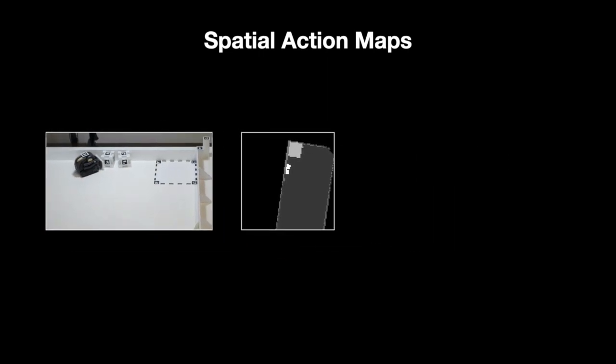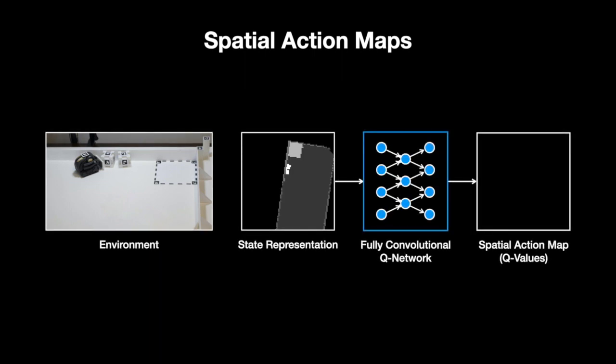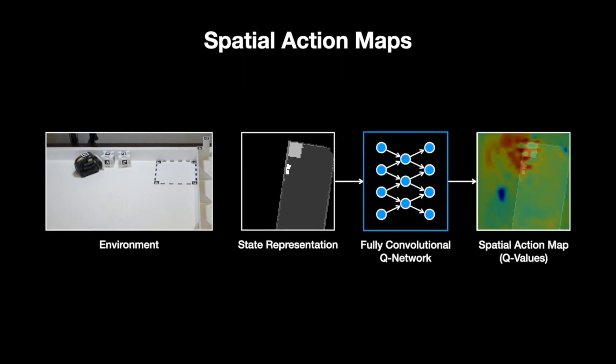This allows us to use a fully convolutional network to map from state images to actions, such that the actions are spatially anchored on local visual features of the scene.